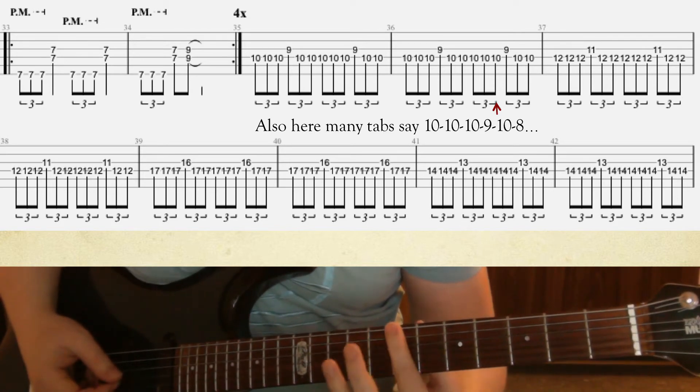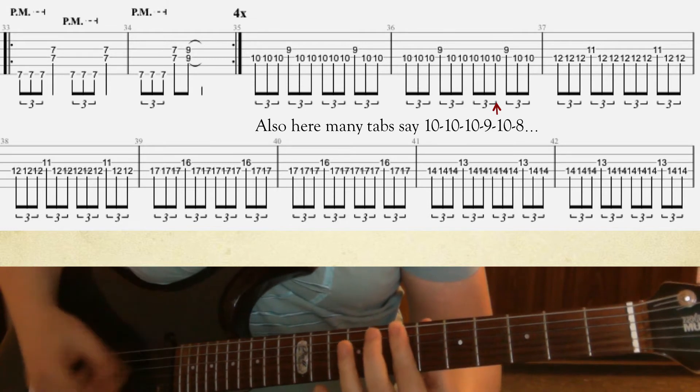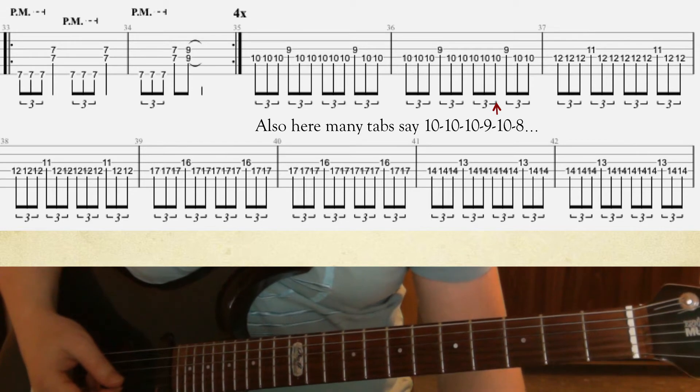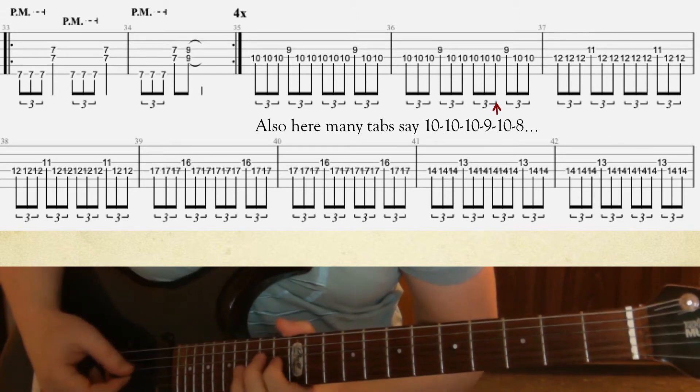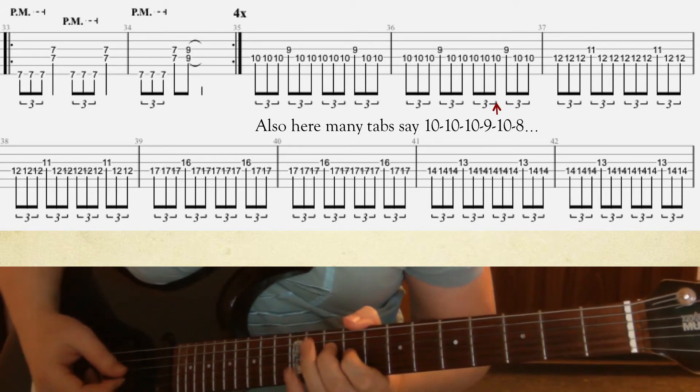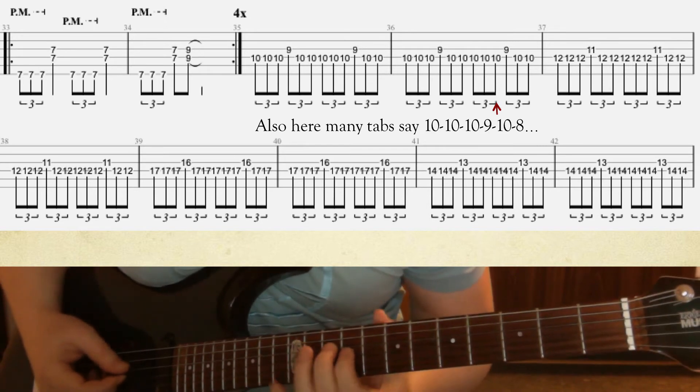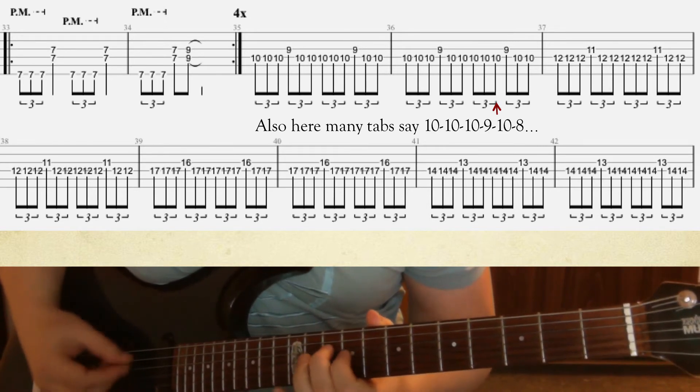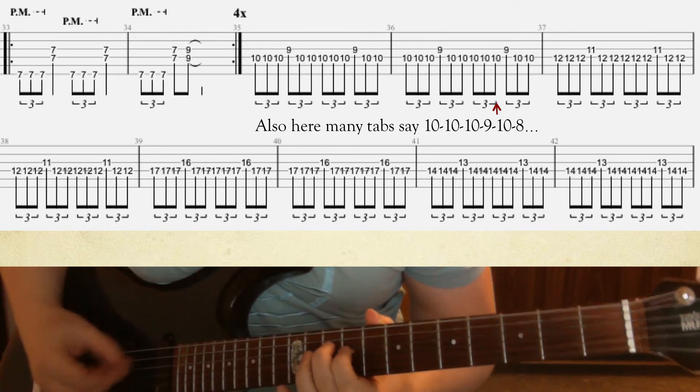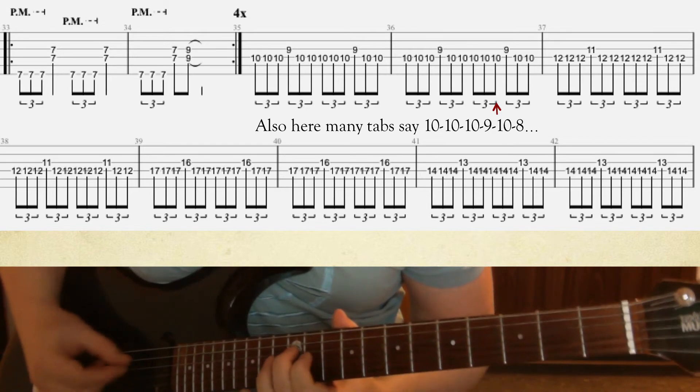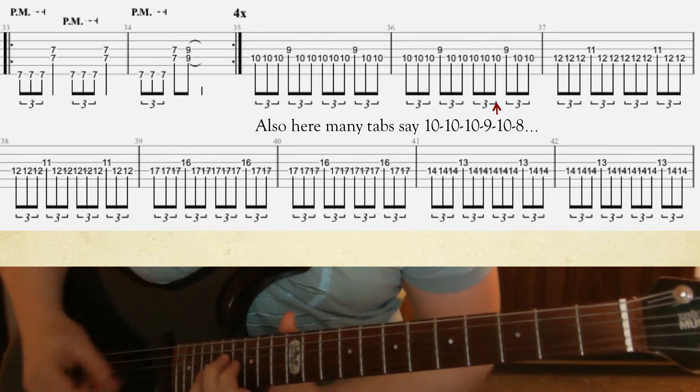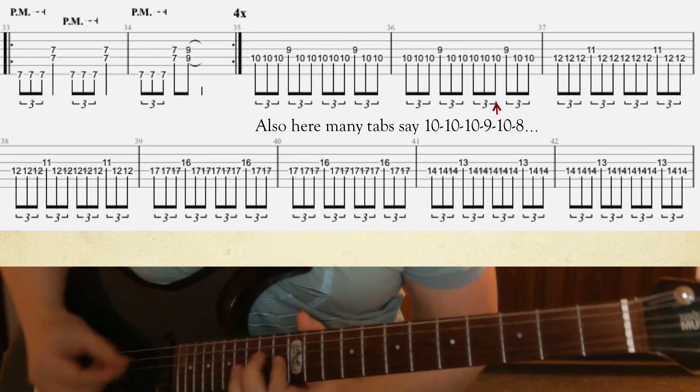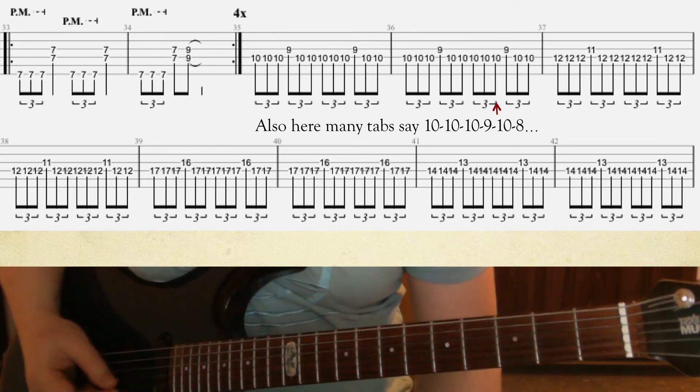Right. And then we can down-pick everything, you know, we can alternate-pick. Yeah, so we play that four times. And then we're gonna have this little familiar pattern again, but it's gonna be played much higher up here.